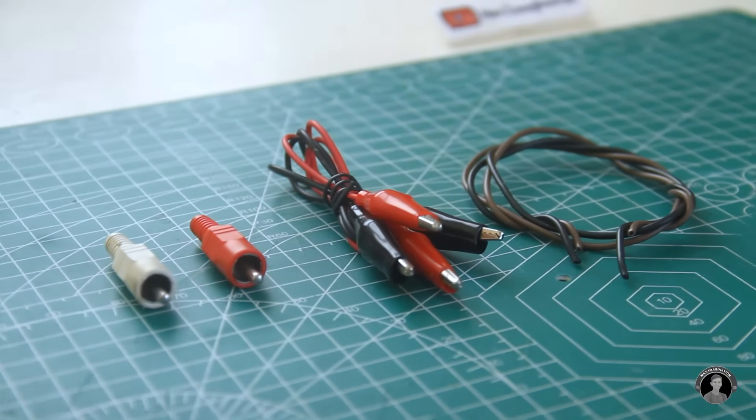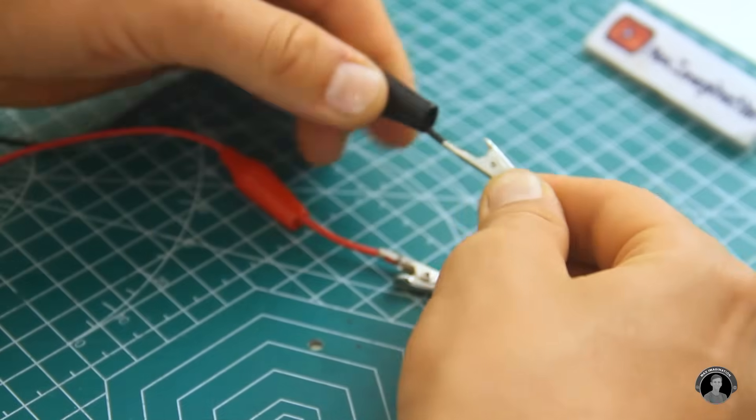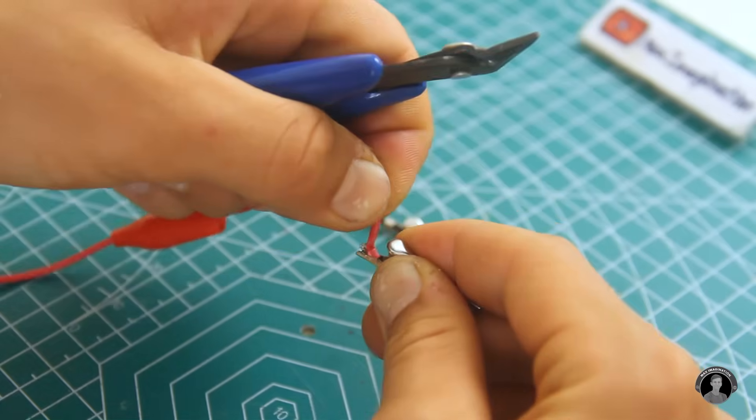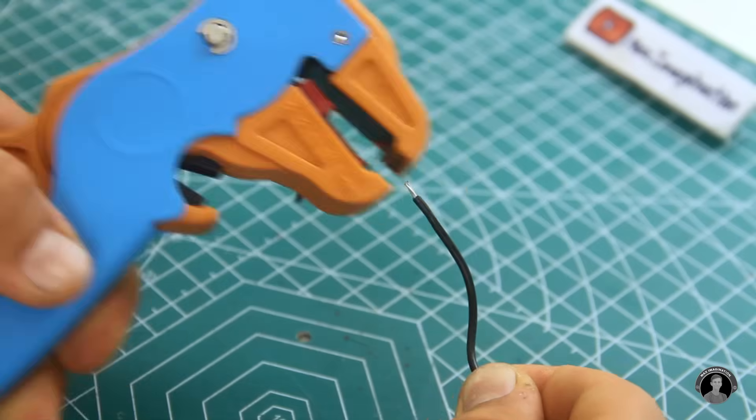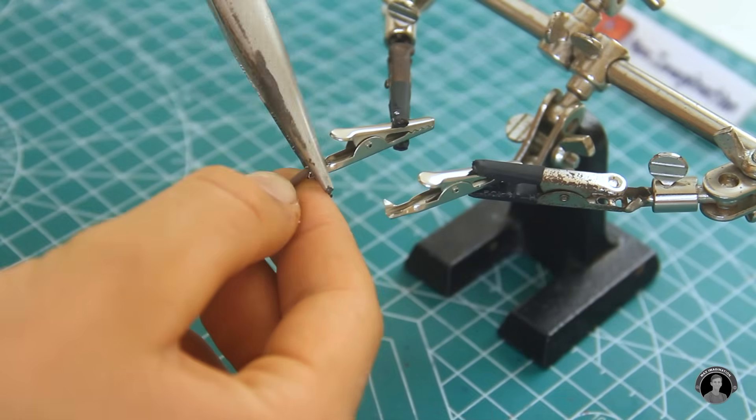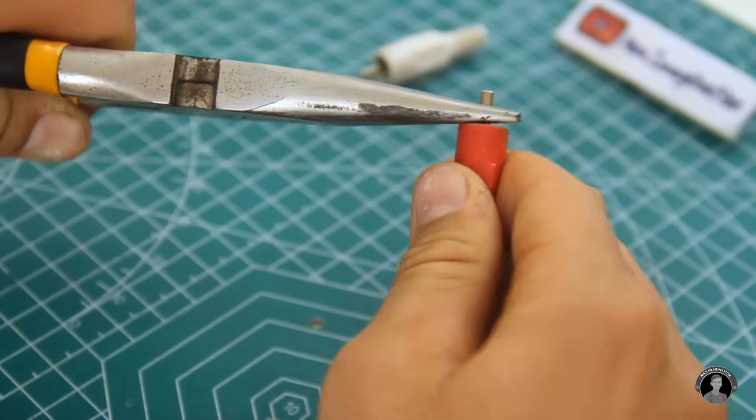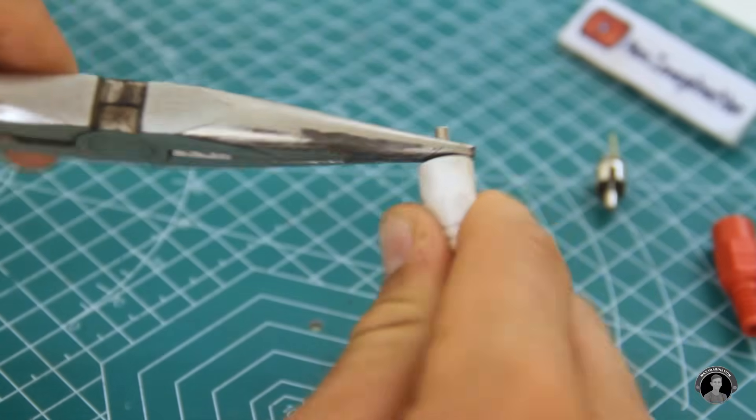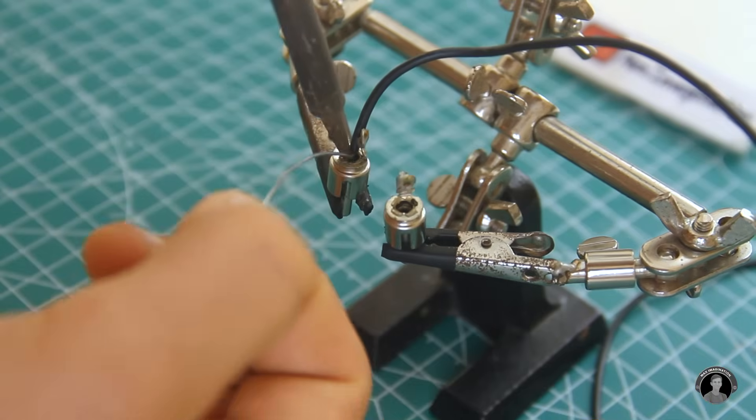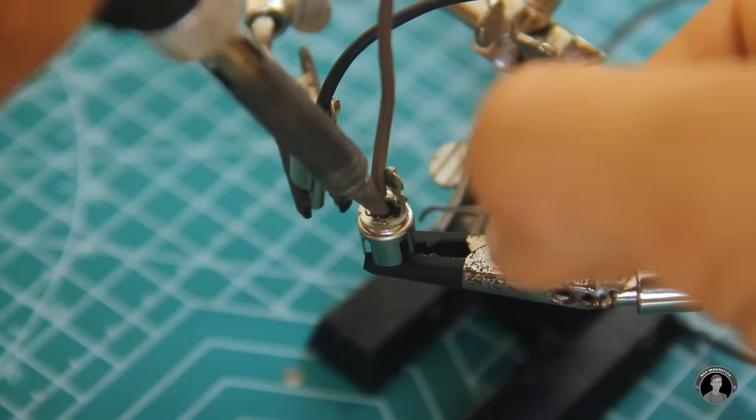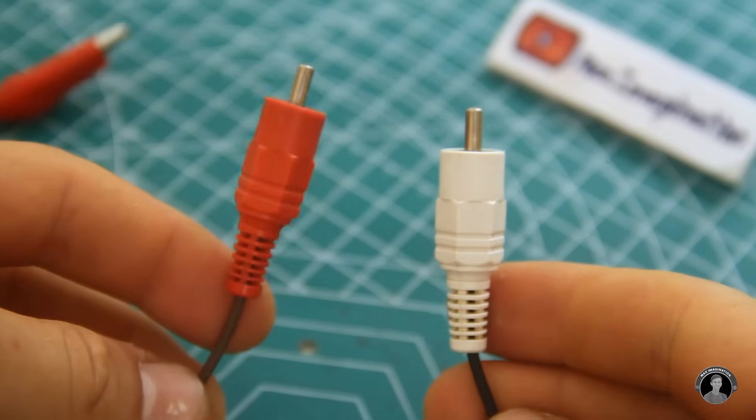So here let's make the two wires which will connect to the variable pins of the power supply unit. And on the ends of these two wires you have alligator clips which can connect to any component or circuit that you'd want to test. And there we go, we have the two variable output wires.